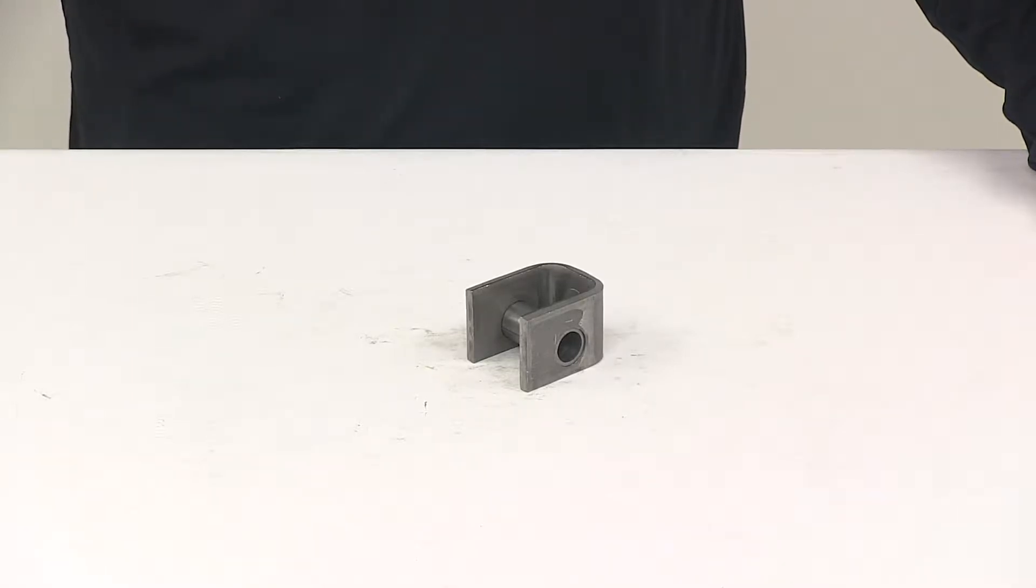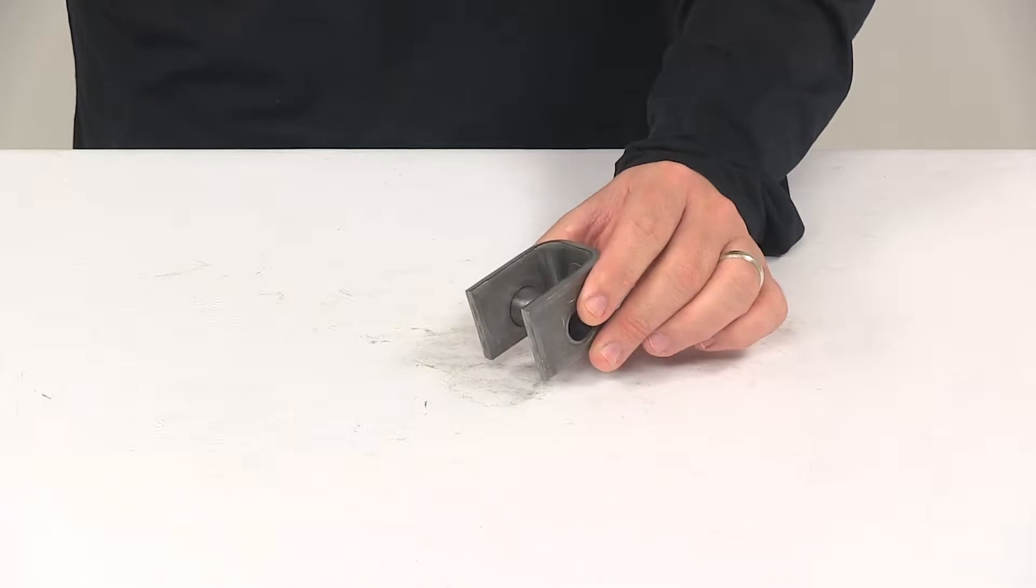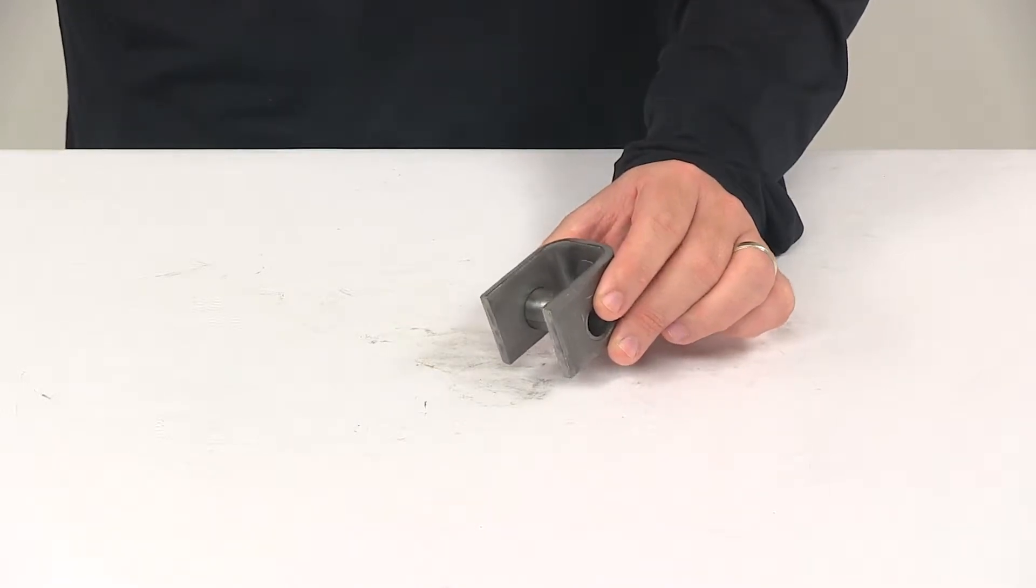Today we're going to be taking a look at the rear hanger with the included bushing. This is for a single axle trailer suspension system. This rear hanger suspends a double eye leaf spring on a single axle trailer suspension system only.